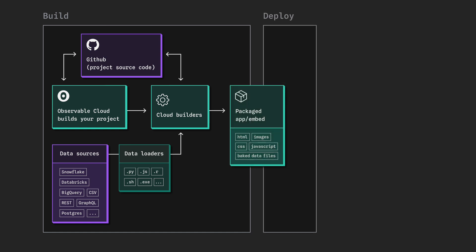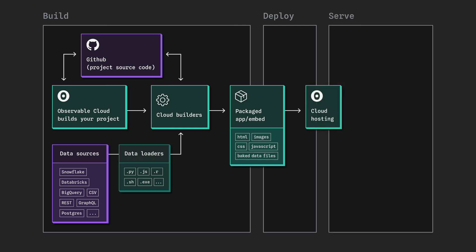In contrast to legacy applications, Observable's unique baked data architecture loads and processes the data it needs in the build step and bundles it with the application. It is then served to your users together with the code to run the app, which means it loads instantly.